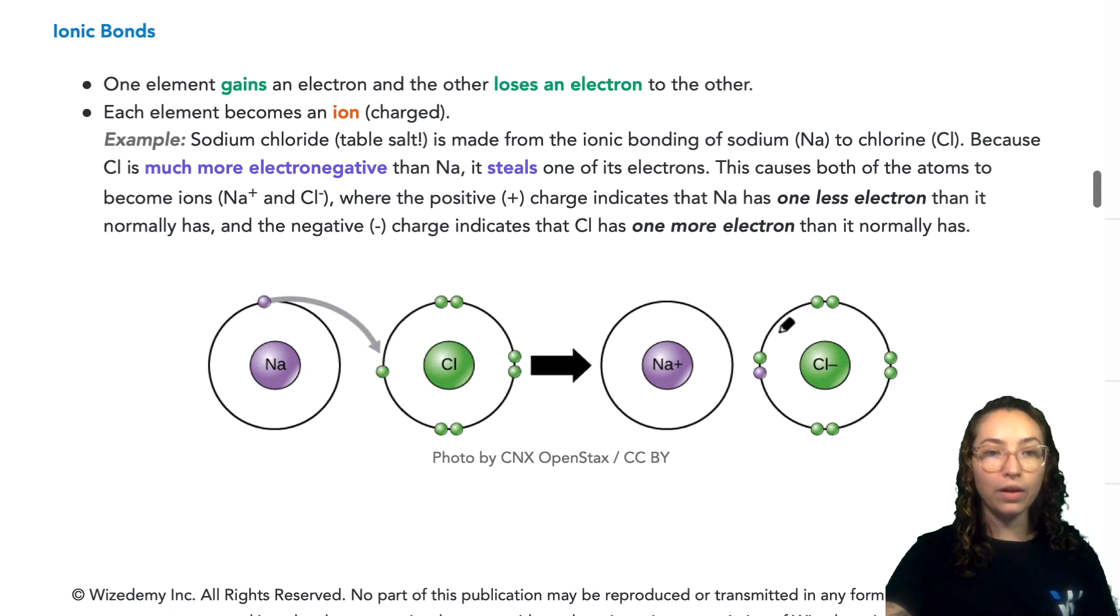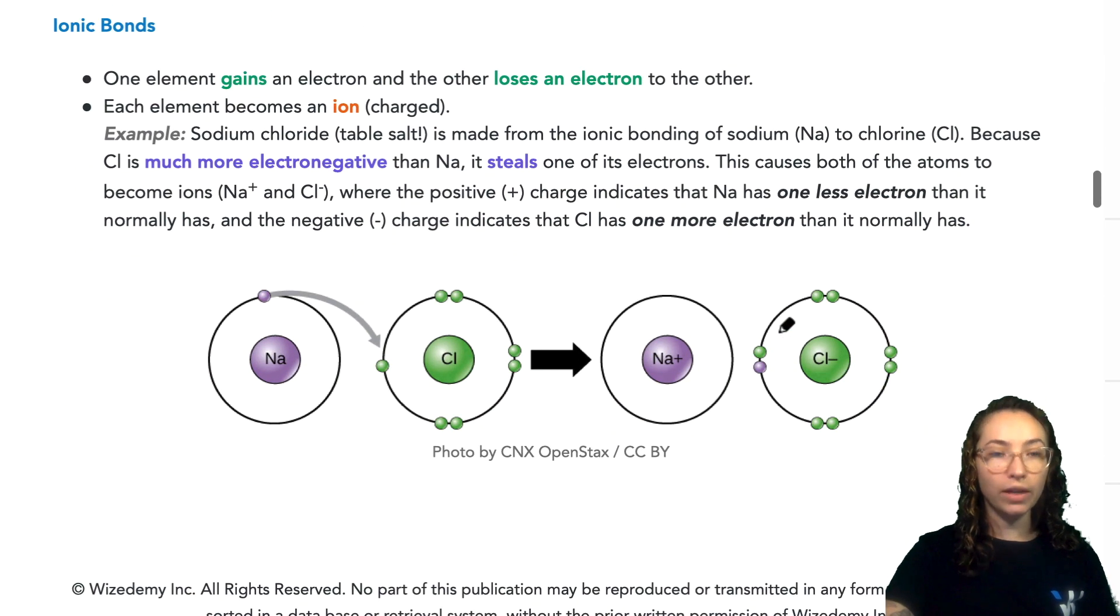The next type of bonds is ionic bonding. So this occurs when the electronegativities between two atoms or two elements of the periodic table are so great that one element actually will gain an electron by stealing it from the other, and the other element loses that electron to the other element.